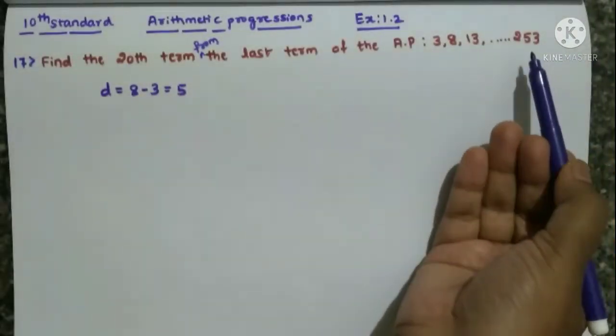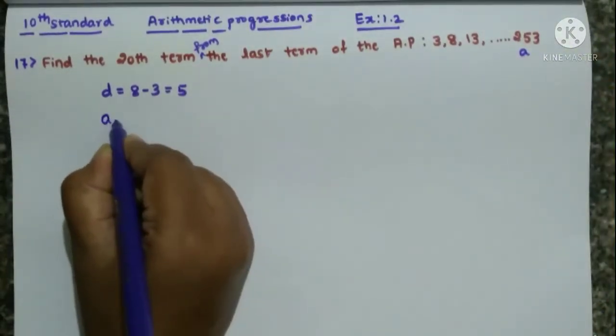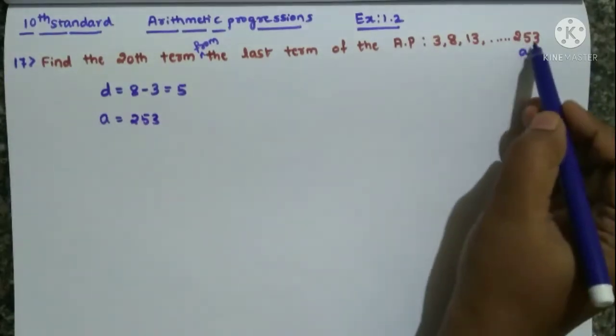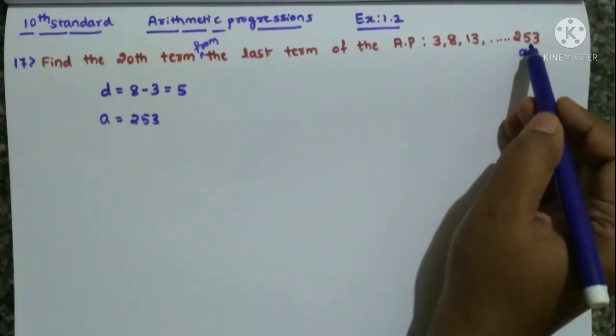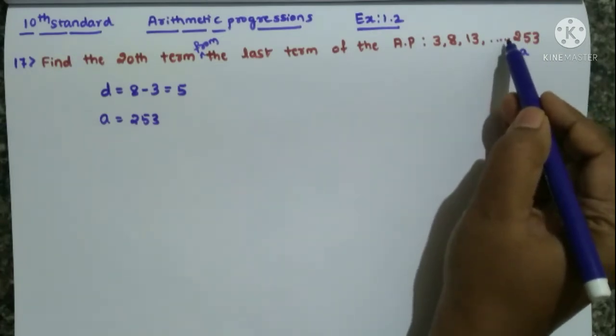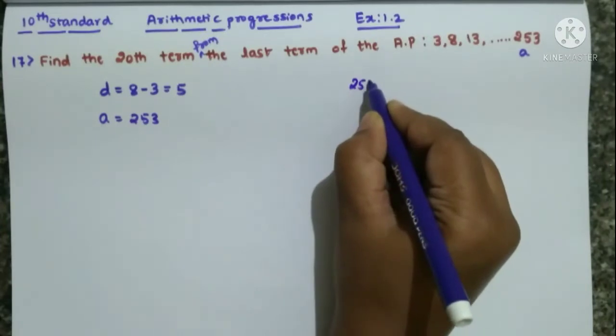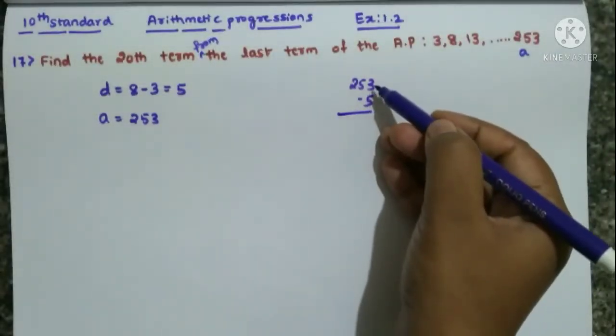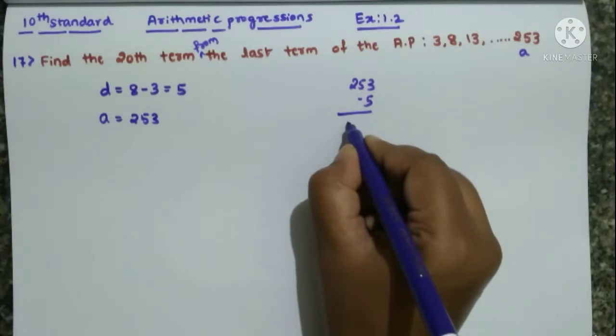If you find from starting, D value is 5. But you want to find the 20th term from the last, right? So you are taking A as 253 here. A value we have to take as 253. If D value is 5, and if you are taking this 253 as last term, you have to take this as first term because we are finding from the last.